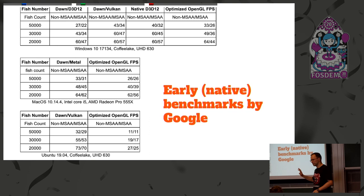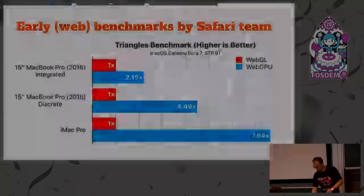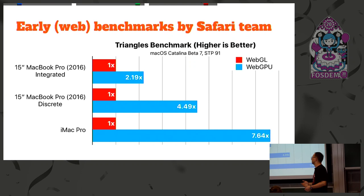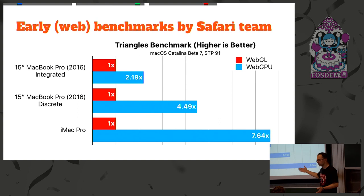The numbers Apple gave us are more convincing, but I'm not sure how seriously to take them. You can see performance differences on number of triangles — I'm not sure why number of triangles would differ since it's anyway reaching the GPU, but that's the numbers they have.